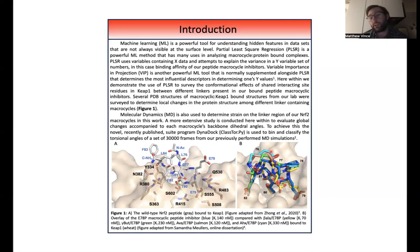Our linker is very important in the macrocyclic design of our inhibitors, because this helps to pre-organize the R-groups of our surrounding residues into a certain conformation that's fit for the actual binding to KEEP-1.